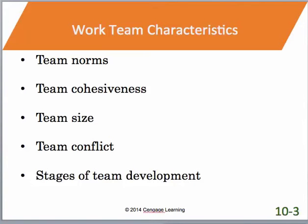The last part of work team characteristics covers the different stages of a team — forming, storming, norming, performing, and adjourning. As presented in the textbook, adjourning breaks into de-norming, de-storming, and de-forming. You go through this creation process, and once you reach the performing stage — which should be the longest stage — you perform. After that's completed, you go back through this settling-down or ending stage of team development.